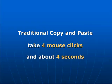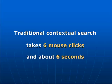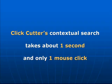For example, making a simple copy and paste takes four mouse clicks in about four seconds. With Clip Cutter's automatic tool, you can make copy and paste four times faster and with no mouse clicks at all. Another example: a simple context search online takes on average six mouse clicks and about six seconds of your time. But with Clip Cutter's automatic tool, you can do the same task in about one second and with just one click of a button. It's a real time-saver.